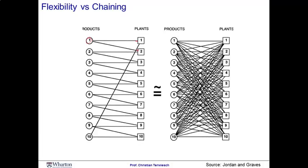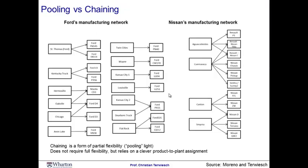Let me illustrate the concept of partial flexibility in the case of the automotive industry. On the left of this slide, you see the plant-to-vehicle assignment of Ford in the United States. Here you see the plants, and over here you see the various product platforms. Notice how Ford's plant network has relatively little flexibility.